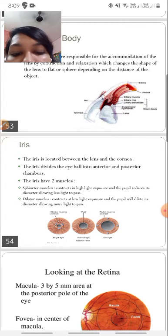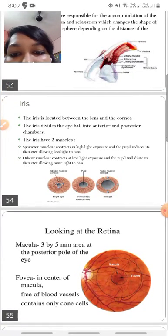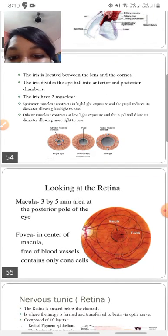The iris is located between the lens and the cornea, and it divides the eyeball into anterior and posterior chambers. The iris has got two muscles. The sphincter pupillary muscle, which as the name suggests contracts in response to bright light, limiting the amount of light that enters the eye. The dilator muscle actually dilates in response to dim light, allowing whatever light that is present in that dim room to enter the eye.